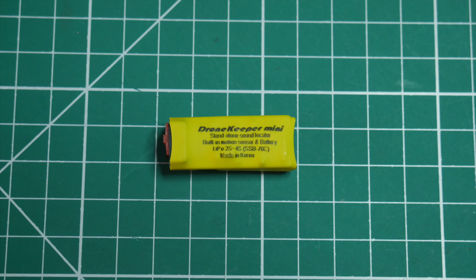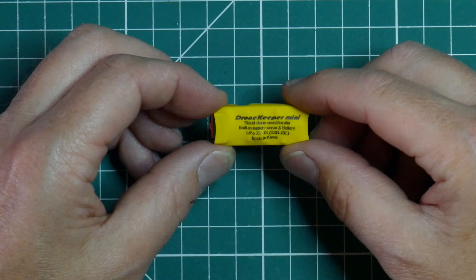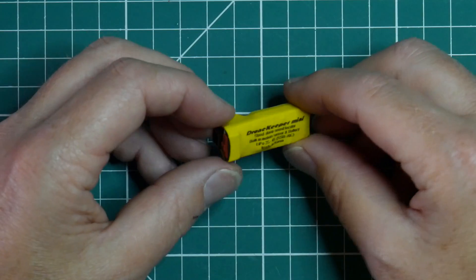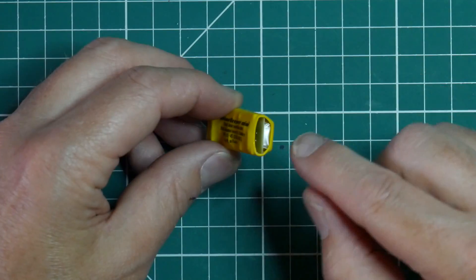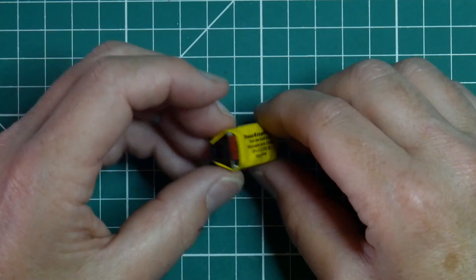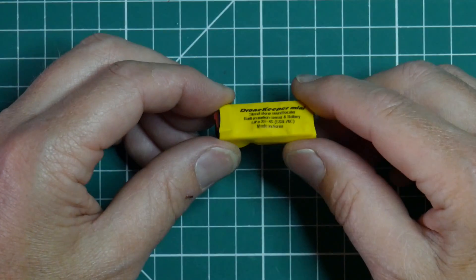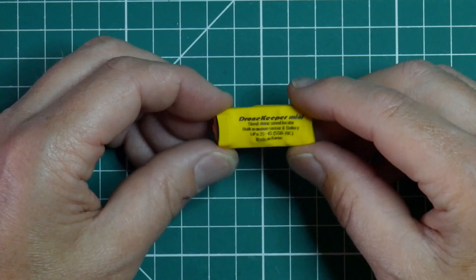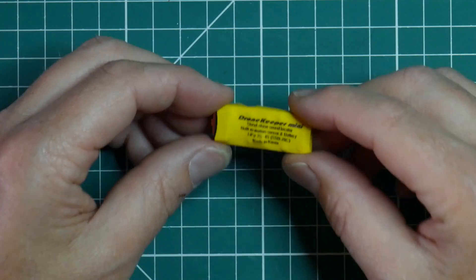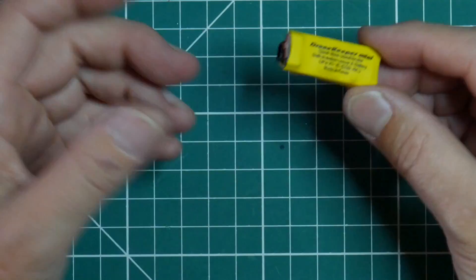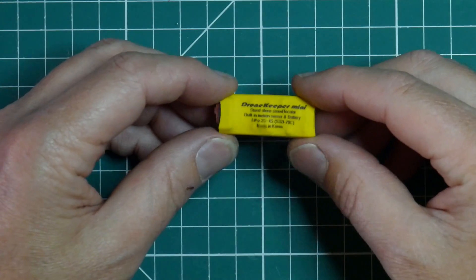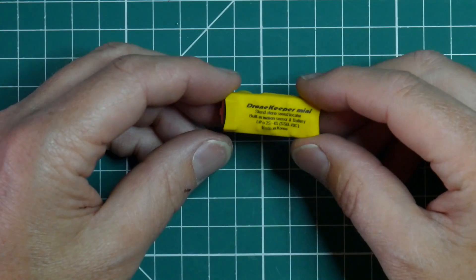This is where the DroneKeeper Mini comes in. It's got its own battery and is incredibly easy to use and set up. As you can see, it's a pretty small device that's got its own LiPo battery in here and a loud piezo buzzer here. It works by using an accelerometer as a motion sensor. If it stops moving for a set time, and the default is 30 seconds, it sounds a loud alarm until it's turned off.